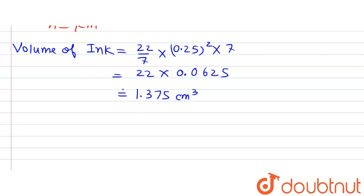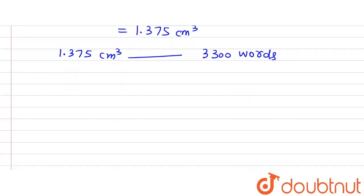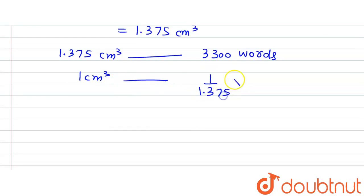The volume of ink in the barrel is 1.375 cm³. According to the question, this volume is used in writing 3300 words. Therefore, 1 cm³ of ink can be used to write (1 ÷ 1.375) × 3300 words.